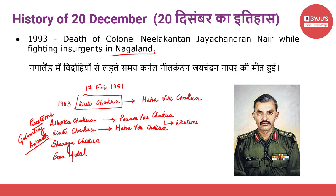Coming back to Colonel Nair: in 1993, his unit was deployed in Nagaland. While leading his battalion, Naga insurgents attacked them. He fought courageously defending his men and was martyred on 20th December 1993. He was awarded the Ashoka Chakra — first in order of peacetime gallantry awards — posthumously. Please note that he was awarded both the Ashoka Chakra and the Kirti Chakra, which are first and second in order of peacetime gallantry awards.